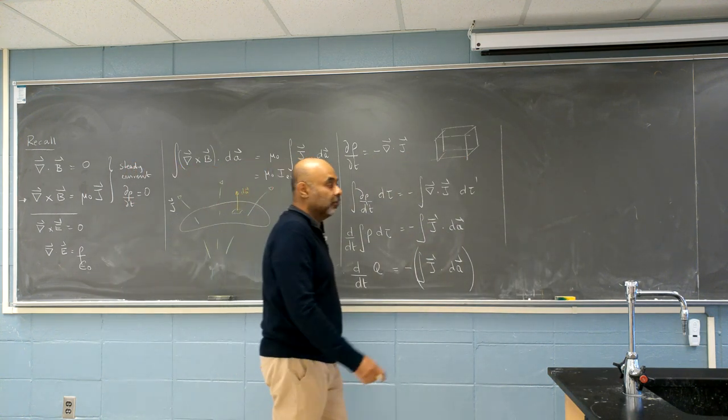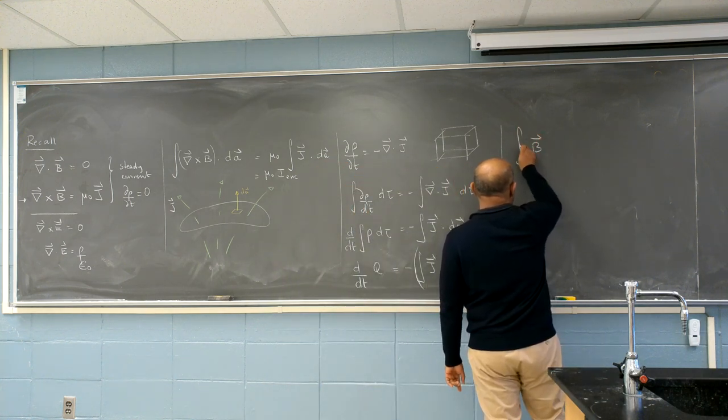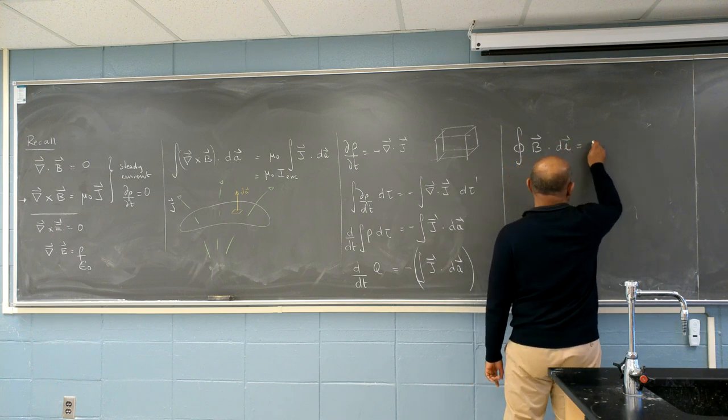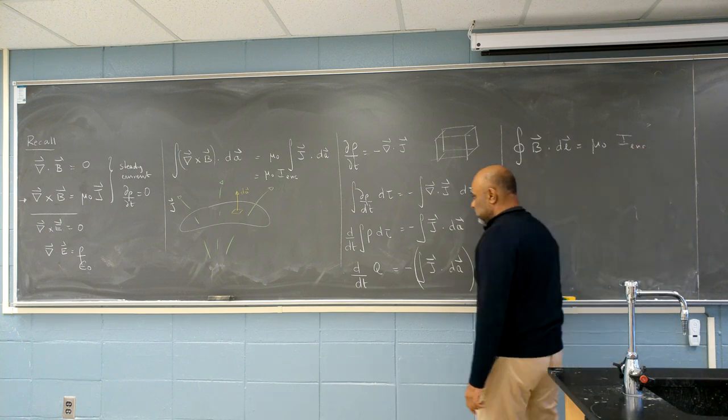Using Stokes' theorem, I can write it as B dot dL. And a closed loop is mu zero i enclosed.